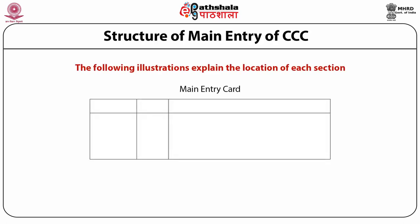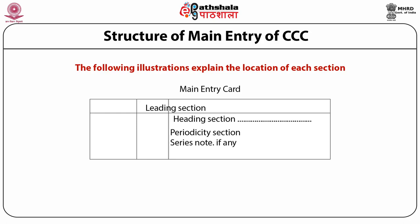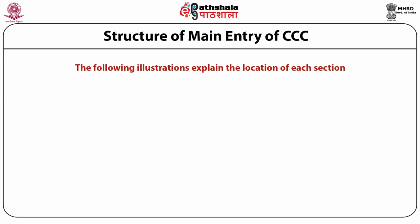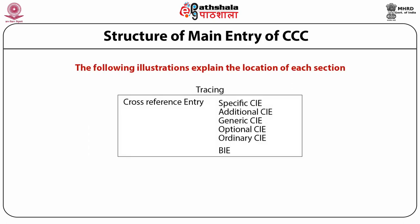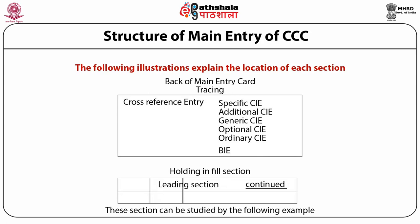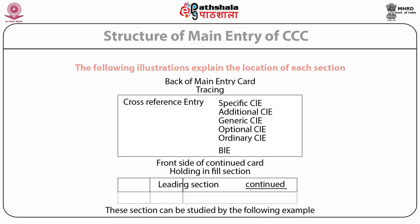Main entry card: the first section is the leading section, starting from the first vertical on the leading line, given in pencil. The second section is the heading section, starting from the second vertical, in which the title of the periodical followed by the sponsoring body is recorded as per rules. Third section is the periodicity section. Fourth section is the series note section, if any. Fifth section is the holdings in brief section. Sixth section is tracing, given on the back of the main entry card. Seventh section is holdings in full section, given on the front side of the continued card, with information recorded in tabular form.